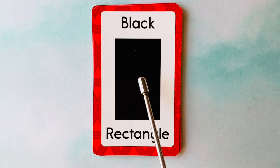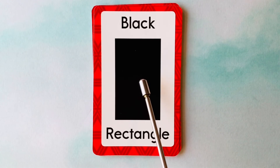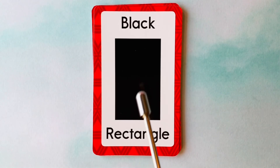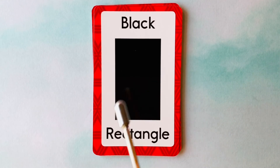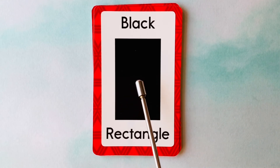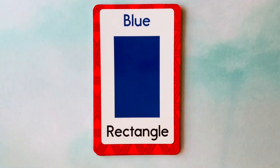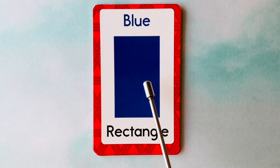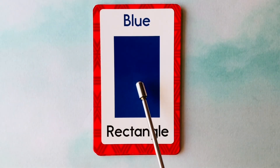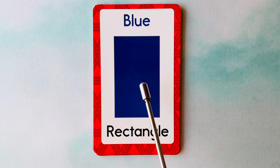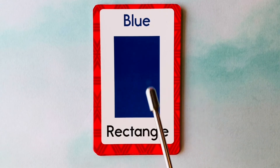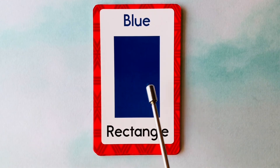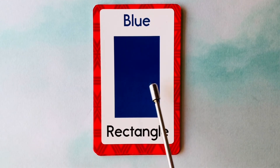This is a rectangle. What color is this rectangle? It's a black rectangle. This is also a rectangle. What color is this rectangle? It's a blue rectangle.